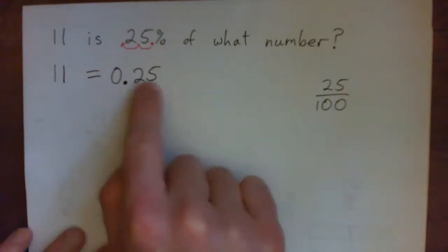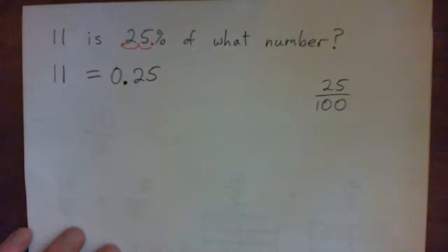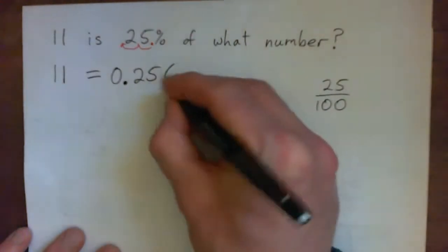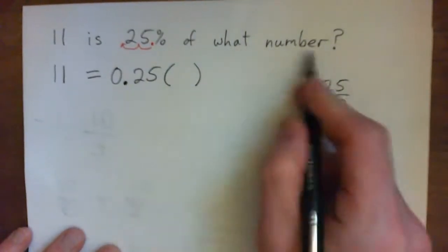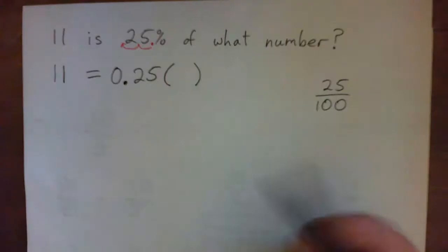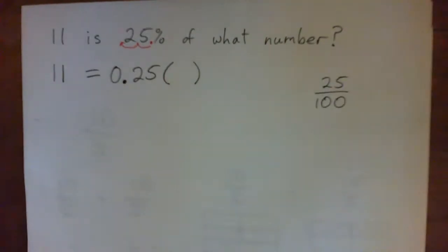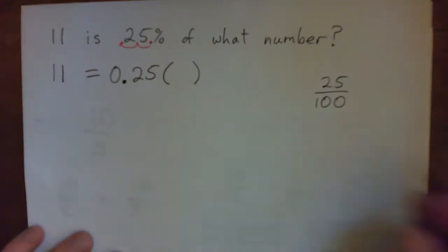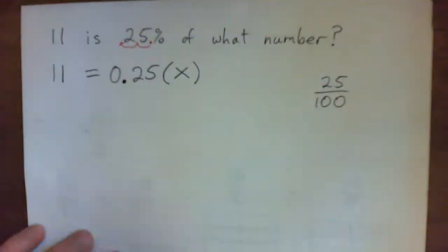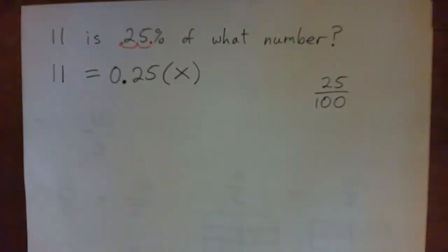And that's what it is, is 25 hundredths, and that's why it is 0.25. So 11 equals 0.25. 'Of' means multiply. 'What number'—what would you do for math? You could do X, Y, Z, A, B, C, it doesn't matter. Let's just put in X.